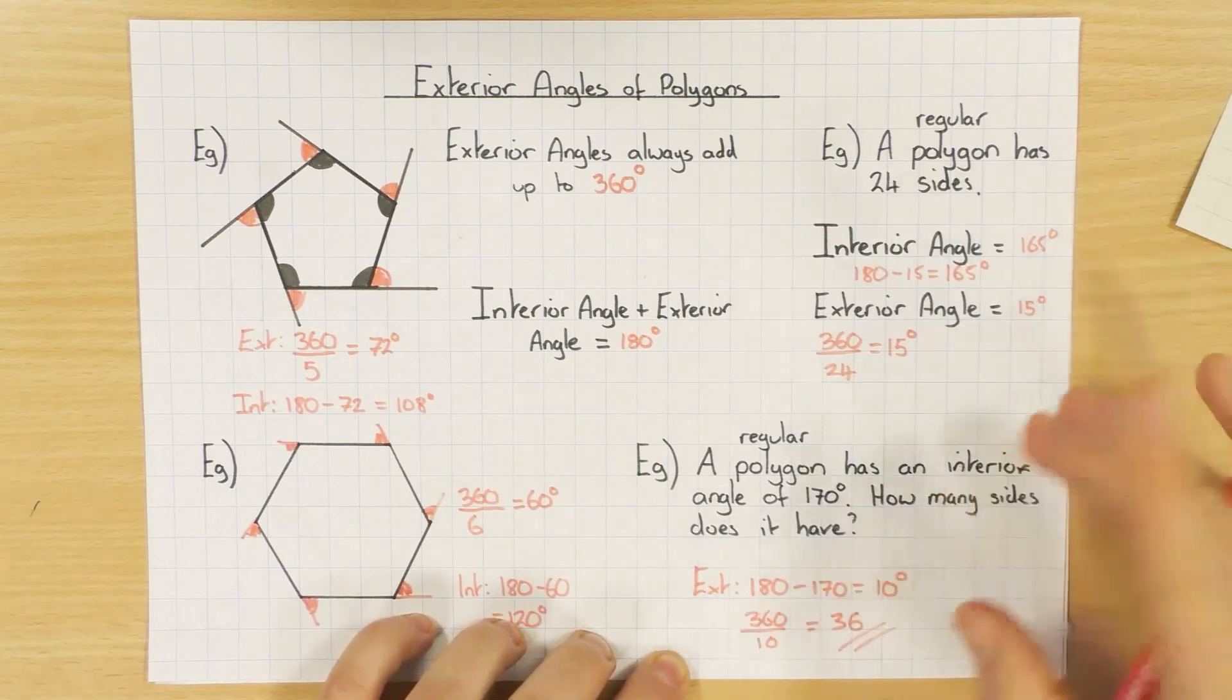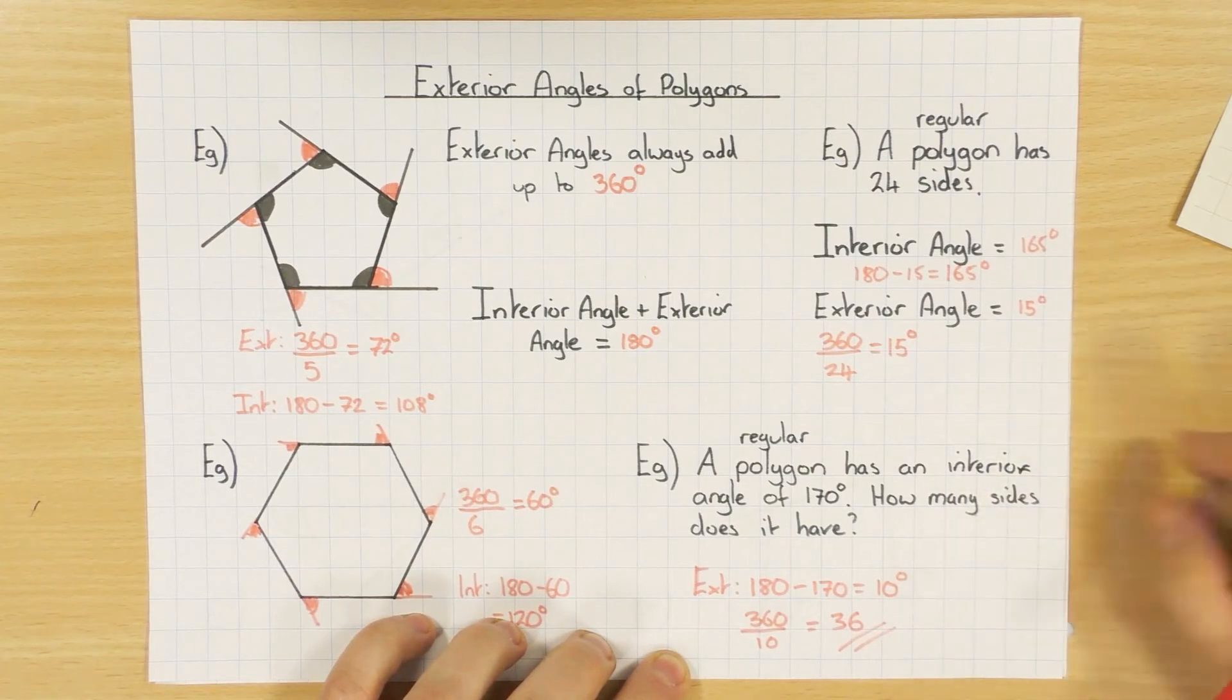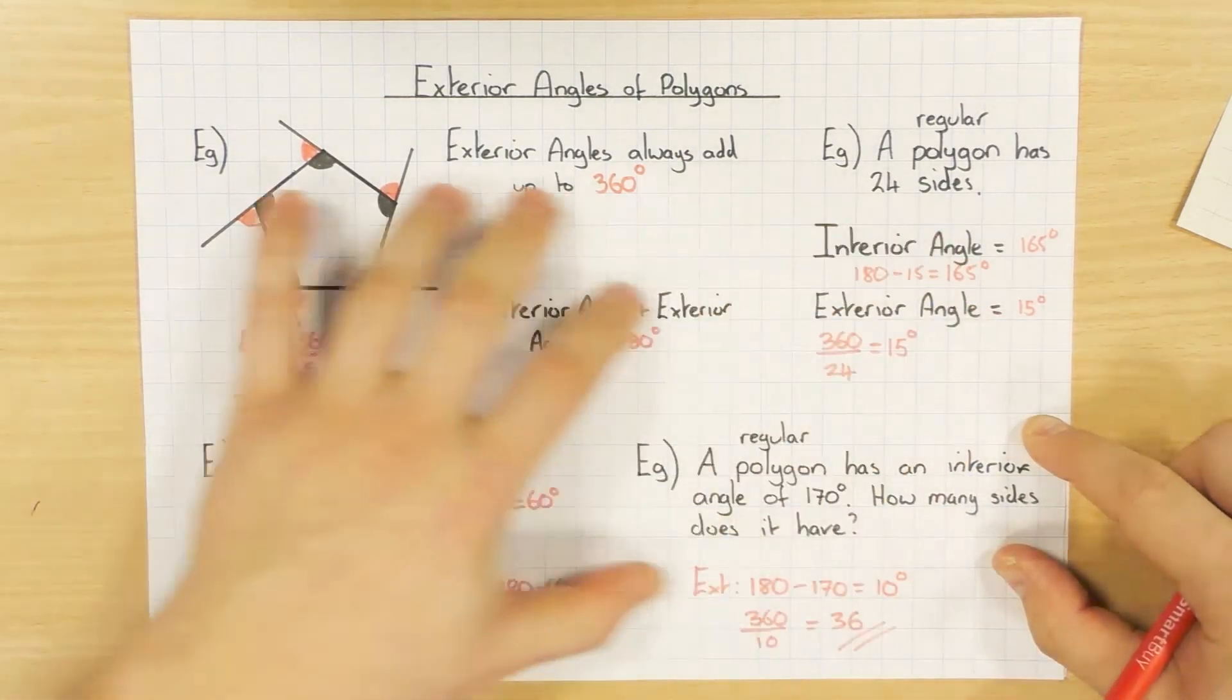Because I know that all of them add up to 360, I'm going to see how many times does the exterior angle go into 360, by doing 360 divided by 10, which obviously gives us 36. So this shape here has 36 sides. So by using the interior and exterior rule, you can work out lots of different questions like that one there.